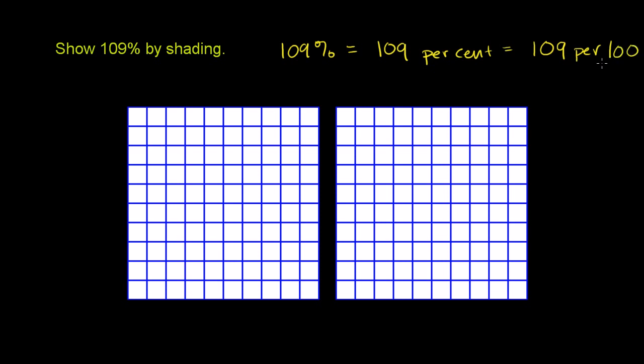If you add 100 per 100, you're dealing with a whole. But now we have more than a whole. We have 109 per 100. We can actually write this as a ratio or as a fraction. This is the same thing as 109 over 100. So let's shade that in.